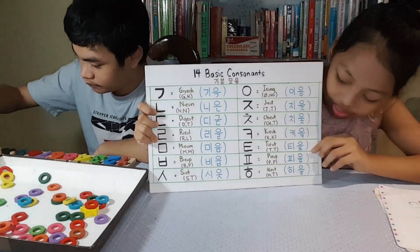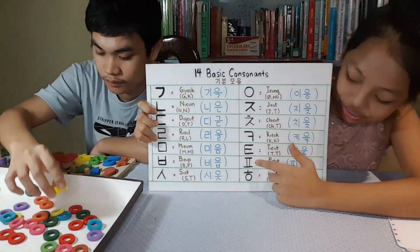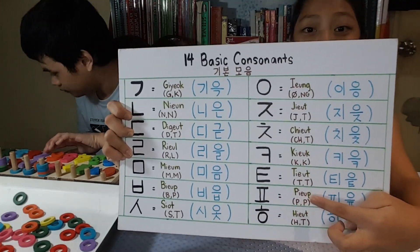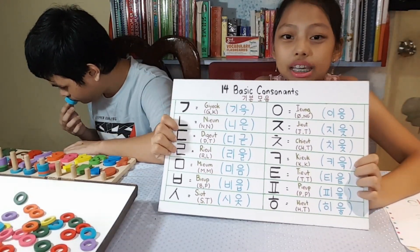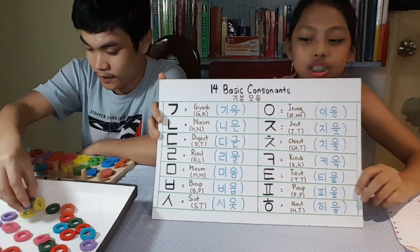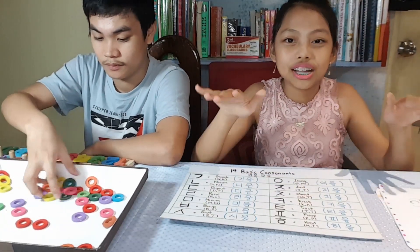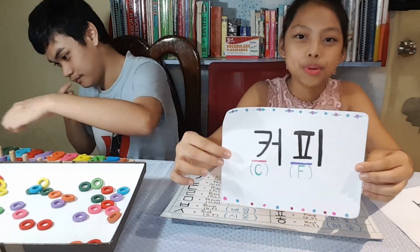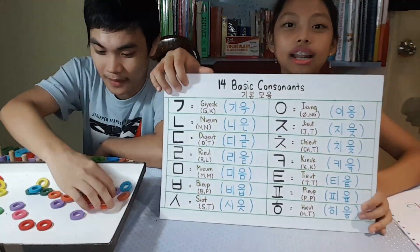The next consonant is Pi-up. As you can see, this is the Korean alphabet character. Pi-up is the romanization, and this one is the Hangul name. The consonant Pi-up is still P sound in the beginning and in the final. The consonant Pi-up is also equivalent to the English letter F - in English there is an F, but in Hangul there is no letter F. For example, the word 'coffee' uses the consonant Pi-up.